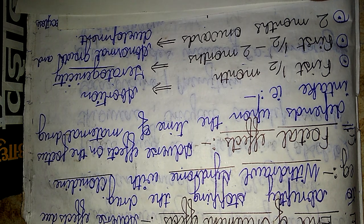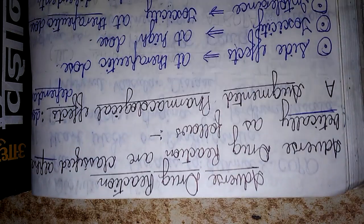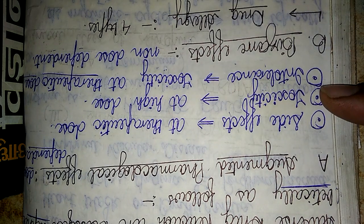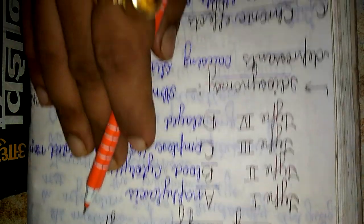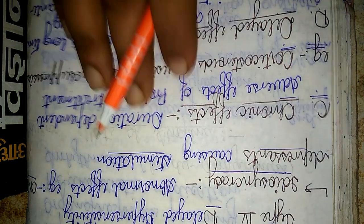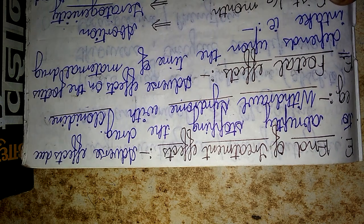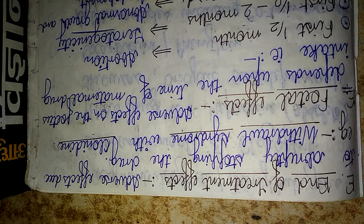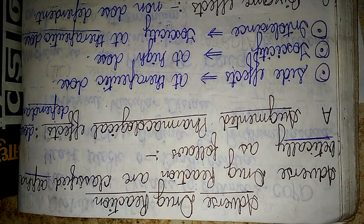So viewers, this was my short trick on how we can very easily remember the adverse drug reactions using an alphabetical series — A for augmented pharmacological effects, B for bizarre effects, C for chronic effects, D for delayed effects, E for end of treatment effects, and F for fetal effects. If you like my video, don't forget to subscribe and press the bell icon to stay updated. Thank you for watching.